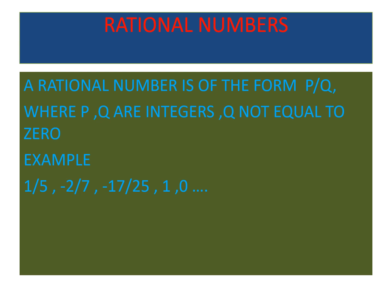Rational numbers are represented in p by q form, along with positive and negative signs. For example: 1/5, −2/7, −17/25. Also, 1 can be a rational number — written as 1/1 — and 0 can be written as 0/1. So these are all called rational numbers.